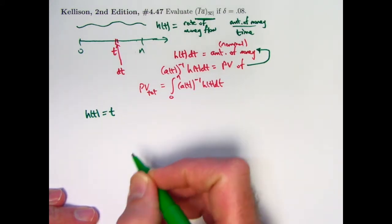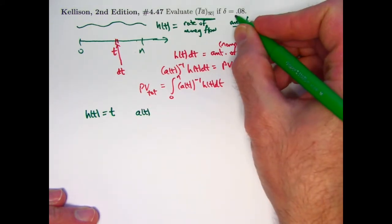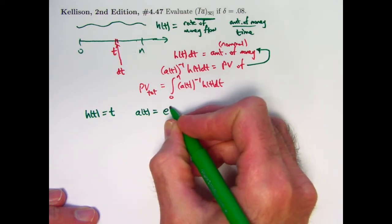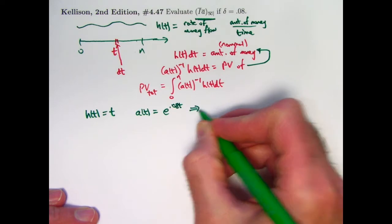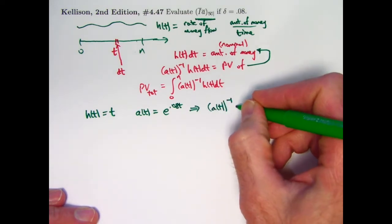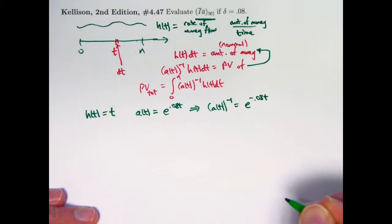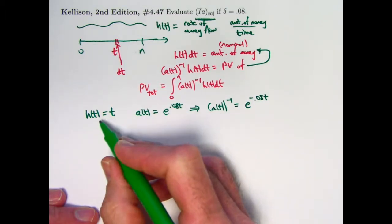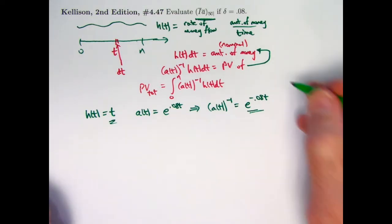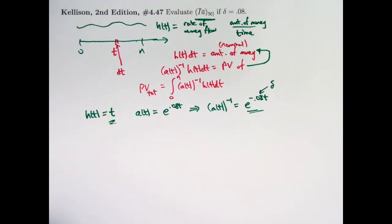Straight line going up would be the graph of h of t. What about the accumulation function? I am assuming compound interest here because I have a fixed force of interest. The accumulation function is going to be e to the delta times t, e to the 0.08t. And so its reciprocal, the discount factor will be e to the negative 0.08t. And so ultimately, we're going to integrate the product of t with e to the negative 0.08t. Actually, let me do it in the general case. Let me go ahead and replace the 0.08 with a delta, and we'll see what it looks like in the general case. And at the end, we'll plug in 0.08.